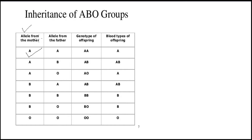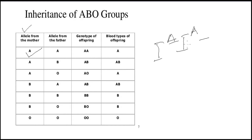In the first example, the mother has provided the dominant gene for blood group A. The father has also provided the dominant gene for blood group A. So the genetic composition of the offspring is AA — dominant, dominant — and hence A will be expressed and the blood group of the child will be A.